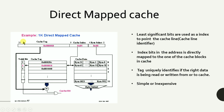Coming to the first type, the direct map cache: the address is divided into three segments. The byte select is used to select a particular byte in a particular cache block. The cache index is used to select the particular cache block, or reference the particular cache line in the cache. These are the lower-order bits.